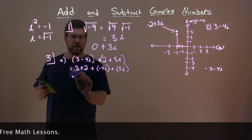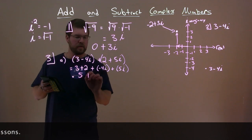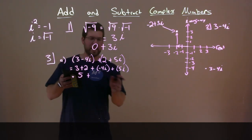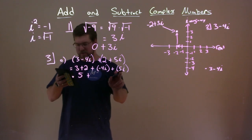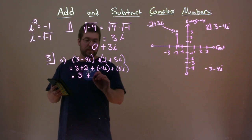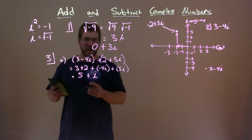Now we can easily combine our like terms. Our first two parts, 3 plus 2 is 5, plus negative 4i plus a 5i. We add the negative 4 plus 5, which is a 1, a 1i. Don't need to write that really. We just write the i and we're done. So we added those two together.